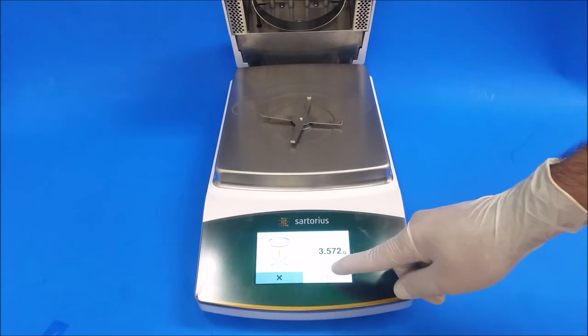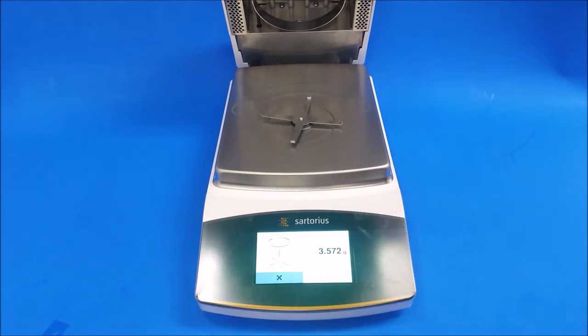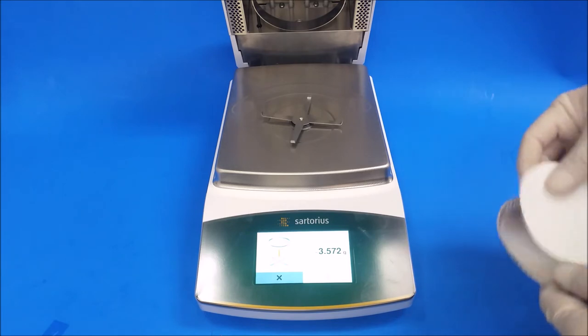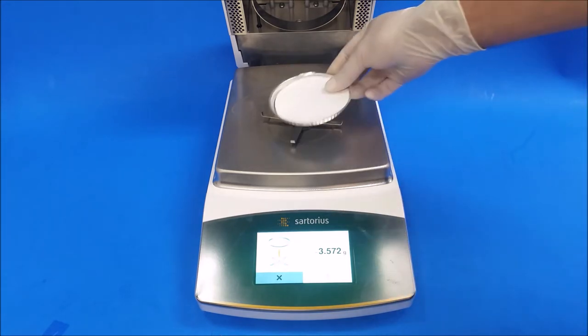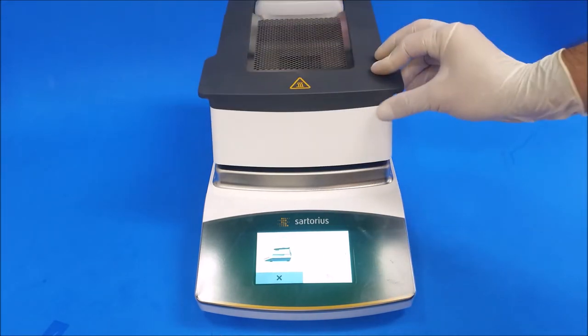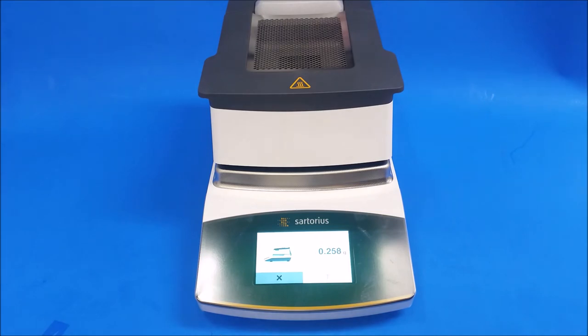And you go to new. Just follow the steps. Just add your dish, your pad, new pad. Close, and you're ready to run a new test.